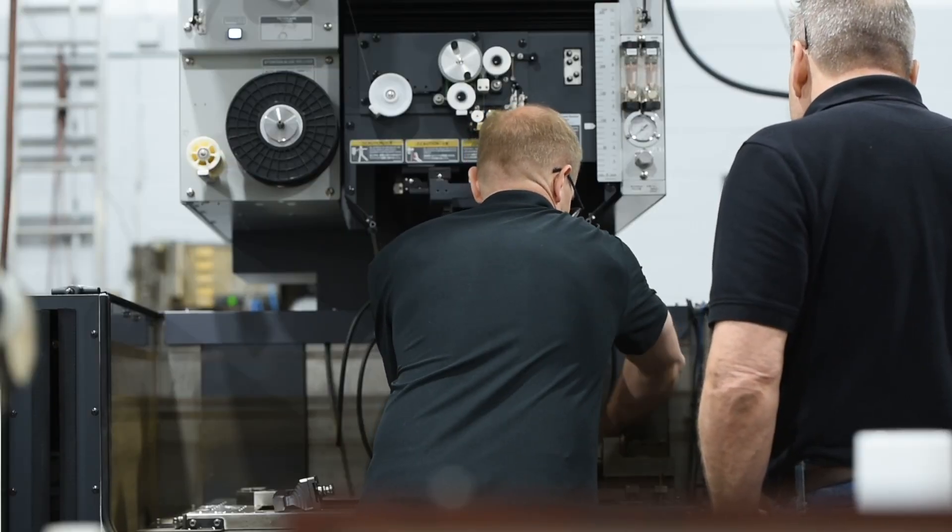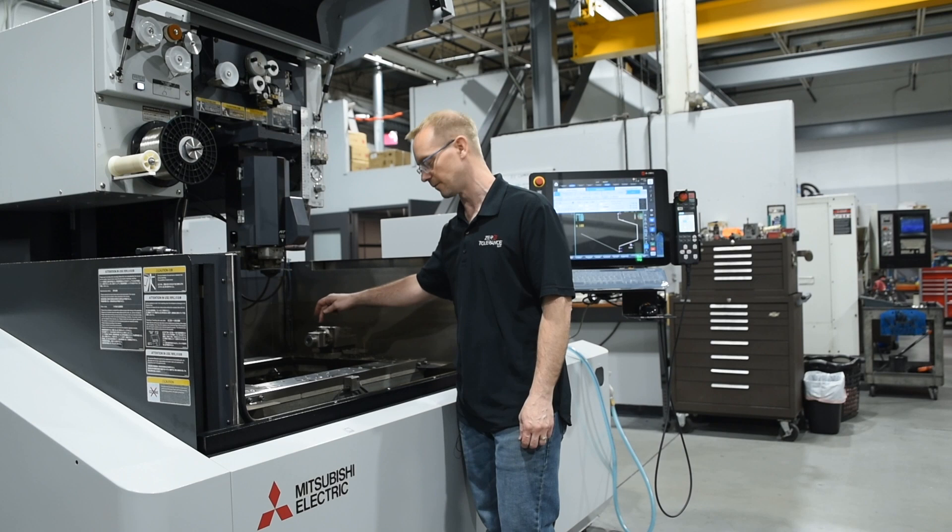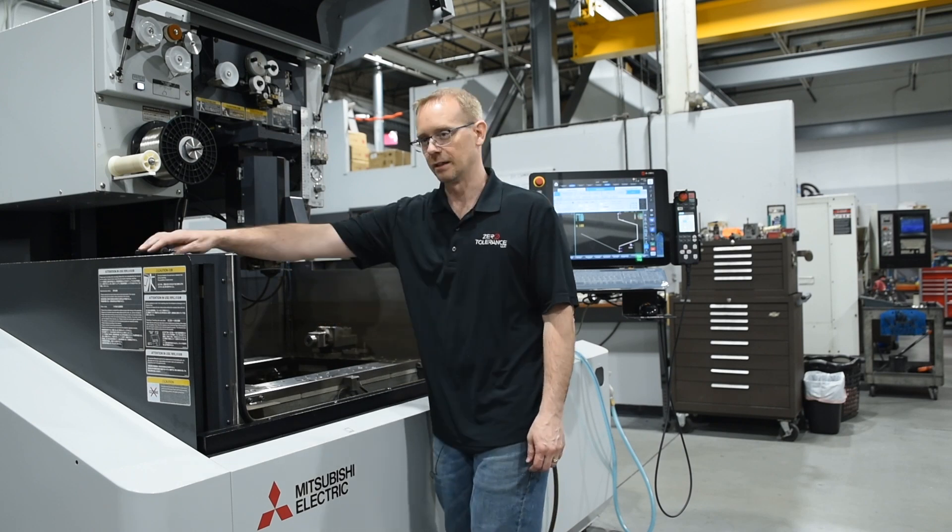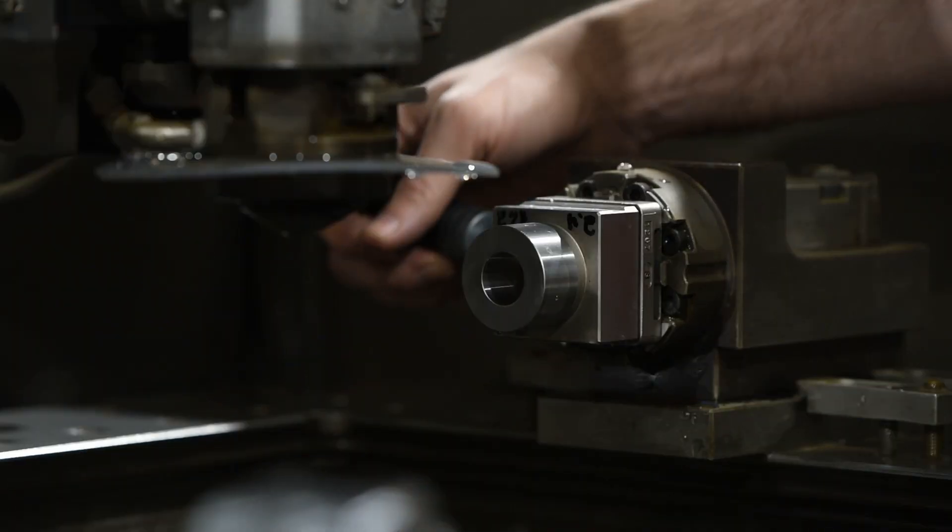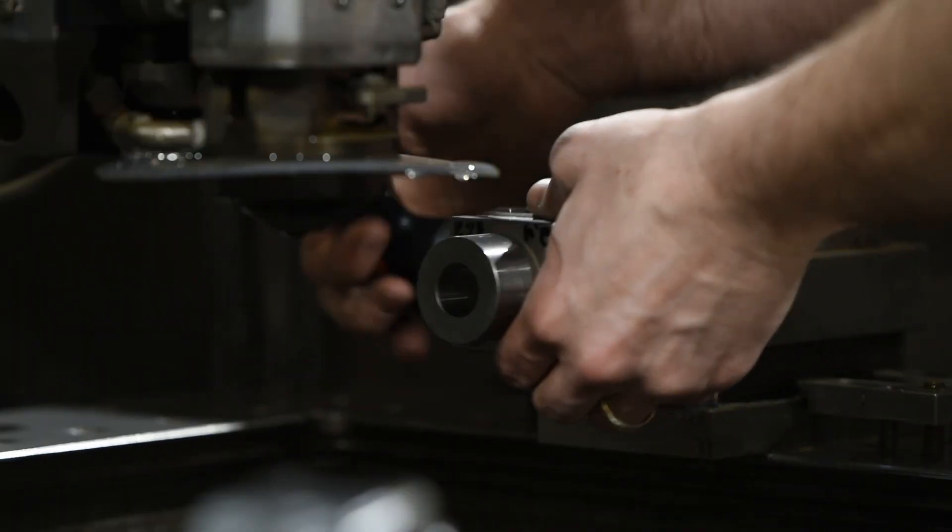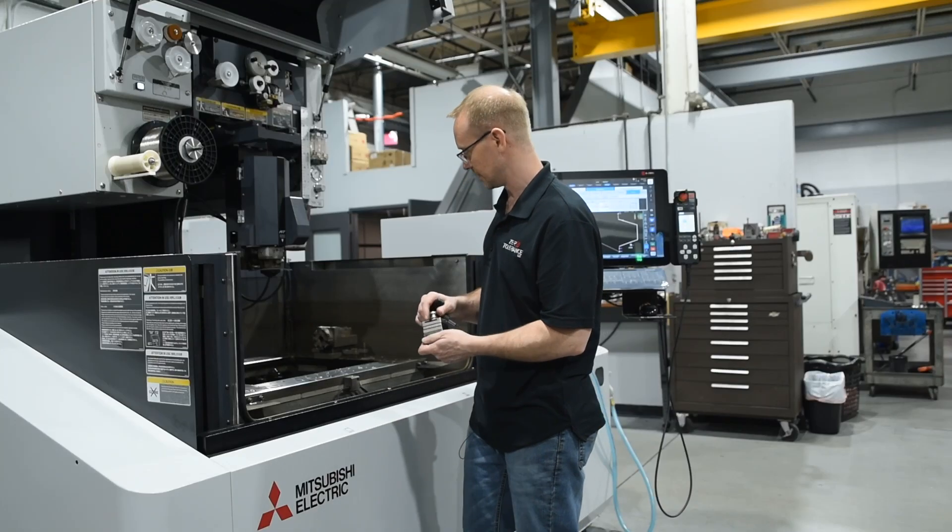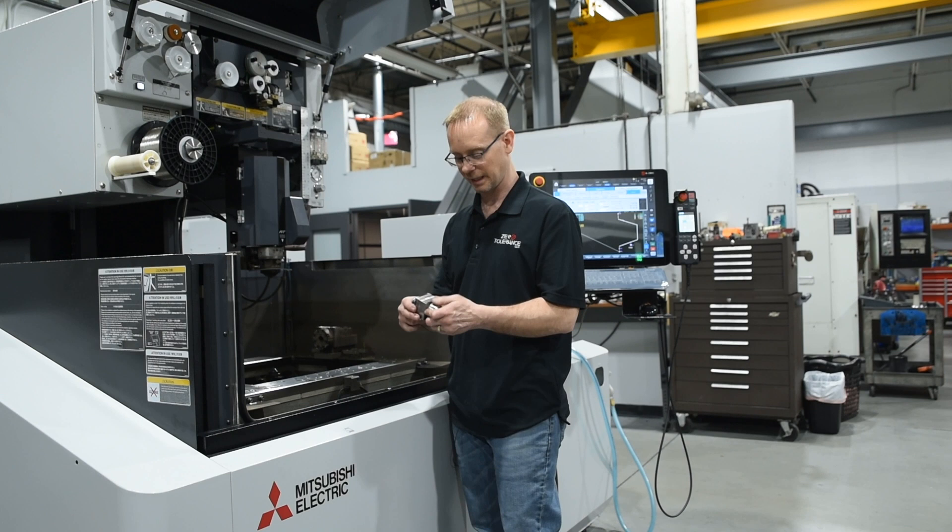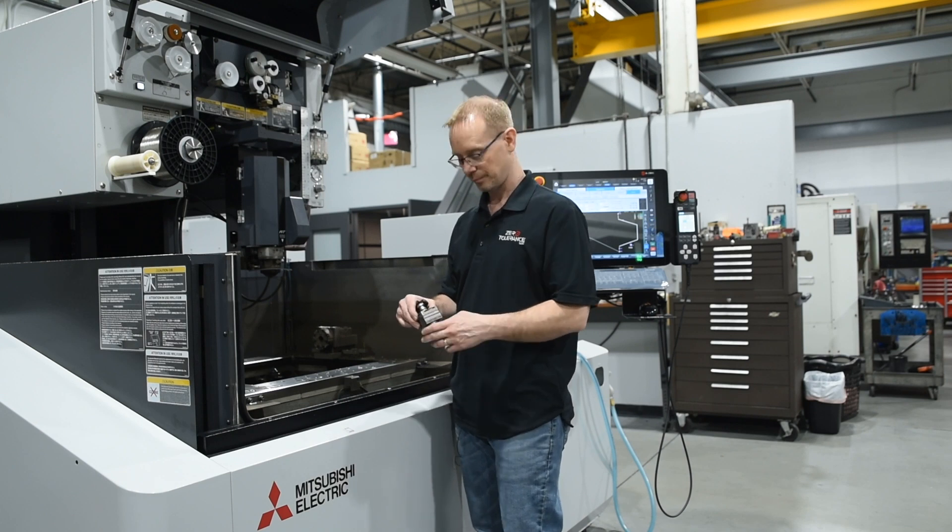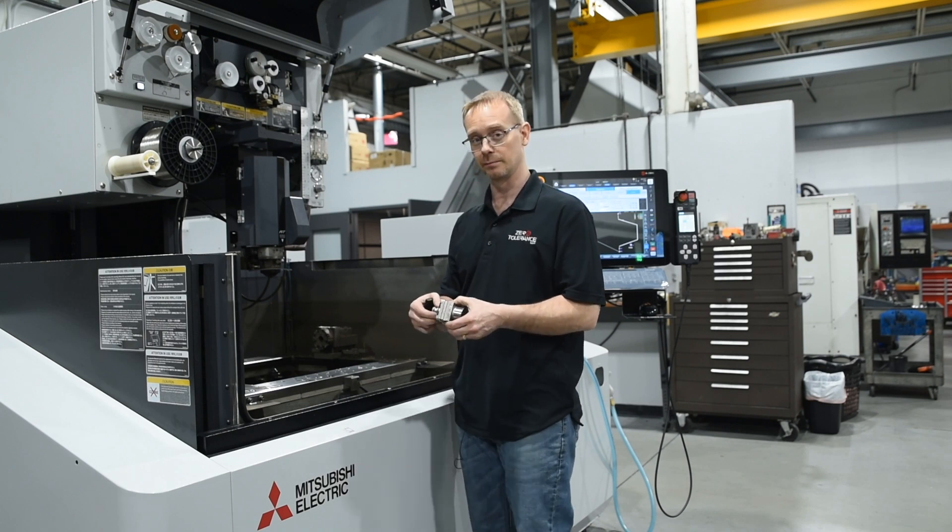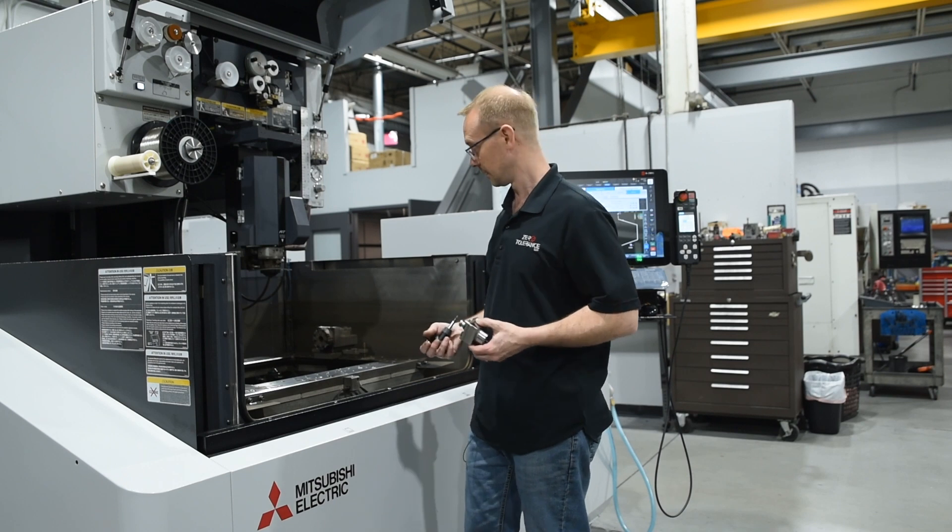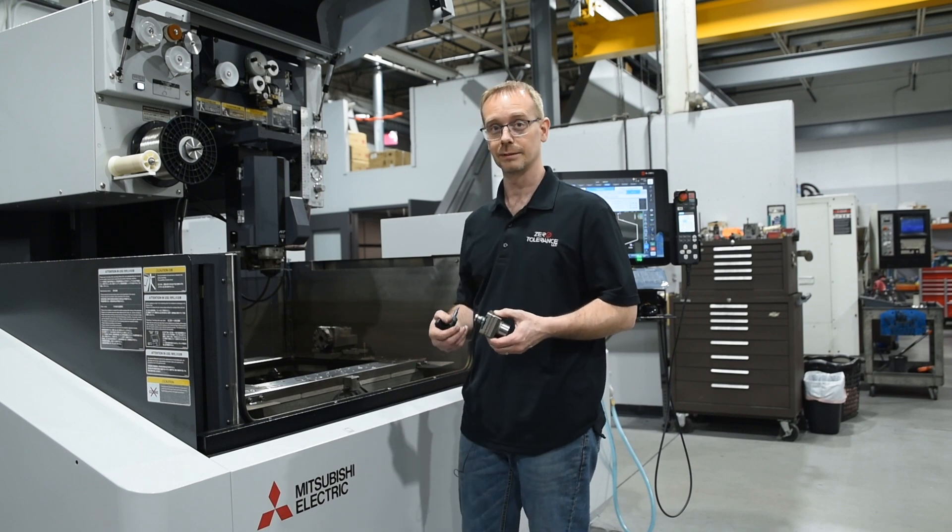Part of the advantage that we utilize Sunspot for is the fixturing and holding of our workpiece. It's a modular system and we can take it on and off with very little effort and extreme accuracy. Using the 3R style holder, we're able to do a lot of different fixtures and setups quickly, easily, and repeatedly.